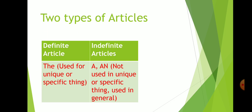Now children, these articles are categorized according to their usage. There are two types: definite article and indefinite articles.